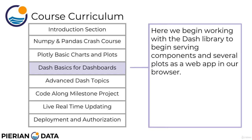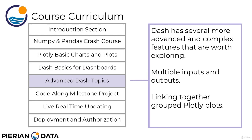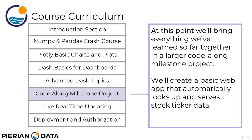Once we learn about the Dash basics, we'll move on to discussing some advanced Dash topics. Dash has several more advanced and complex features that are definitely worth exploring — I think this is really where the awesome part of the course comes into play. We'll deal with things like multiple inputs and outputs, interactive components, controlling callbacks with state, and linking together grouped Plotly plots. Then, because we've learned so much by this point in the course, we go ahead and try to wrap everything together with a code-along milestone project.